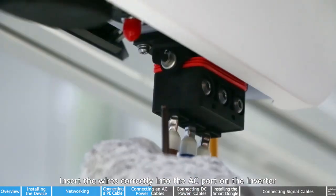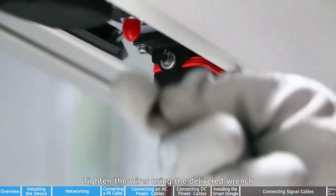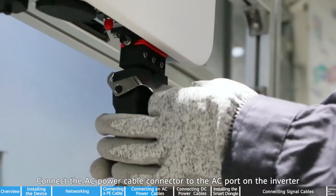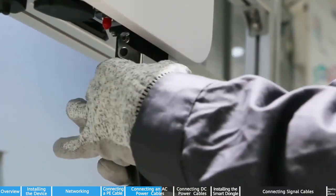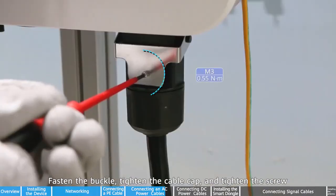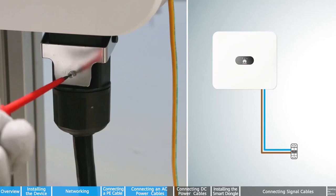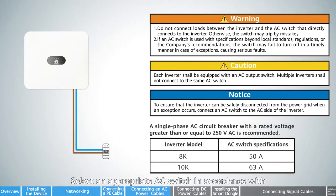Insert the wires correctly into the AC port on the inverter. Tighten the wires using the delivered wrench. Connect the AC power cable connector to the AC port on the inverter. Fasten the buckle, tighten the cable cap and tighten the screw. Select an appropriate AC switch in accordance with local industry standards and regulations.